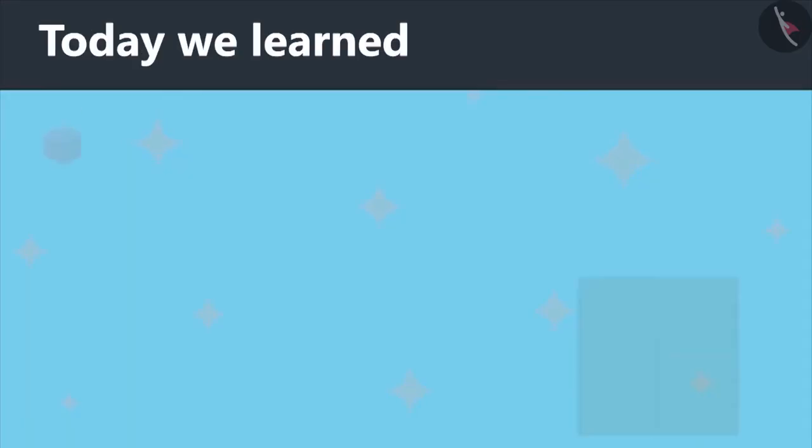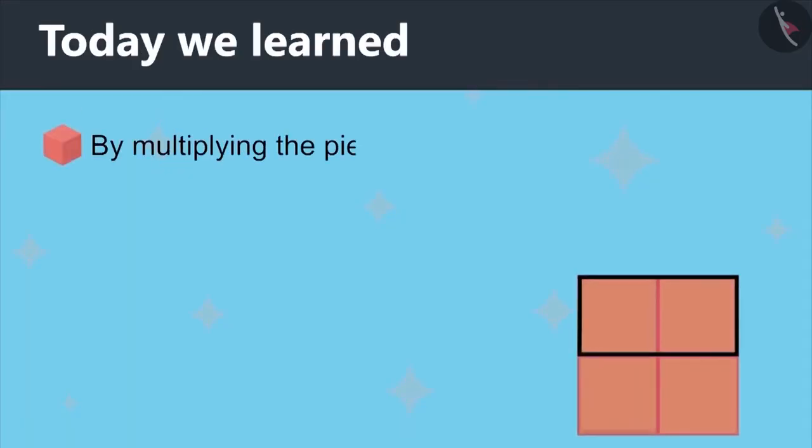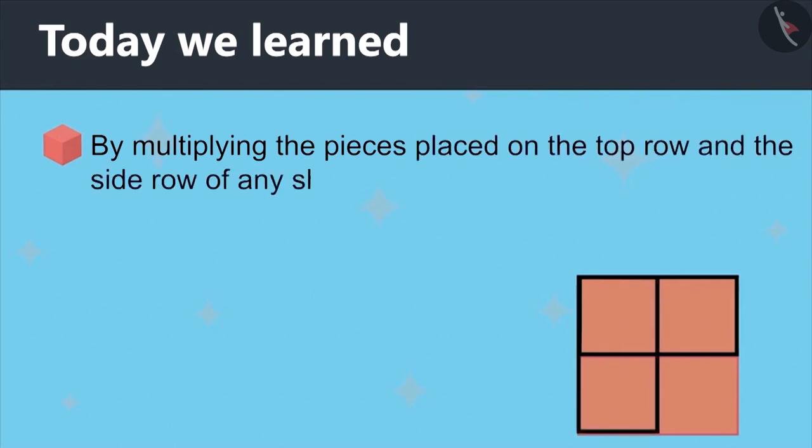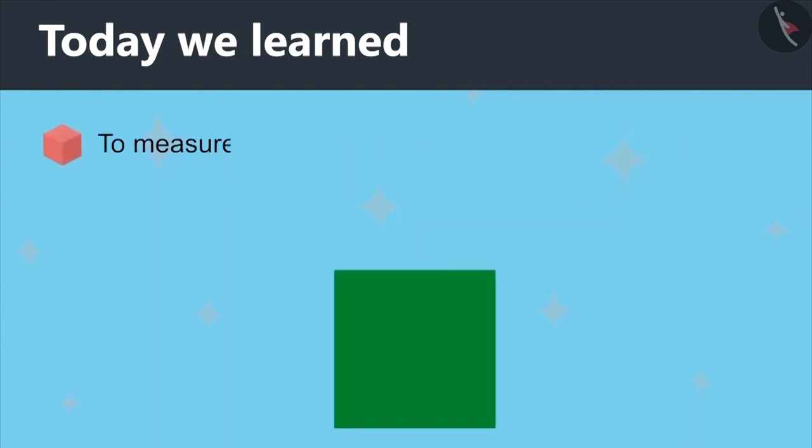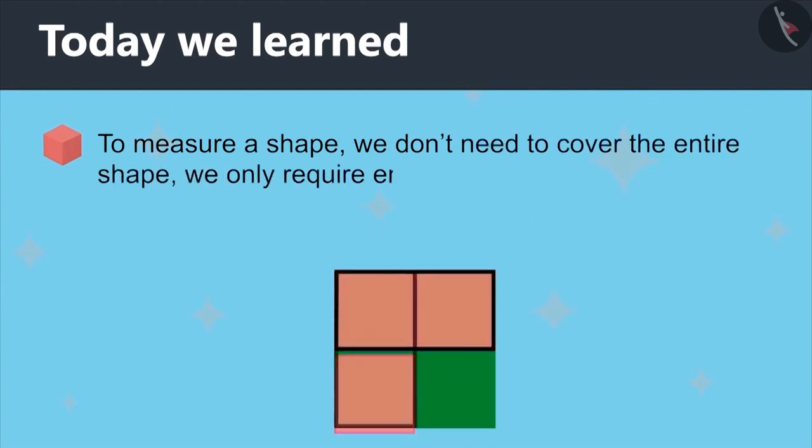Today, we learned, by multiplying the pieces placed on the top row and the side row of any shape, you can find out how many pieces will be required to cover the shape completely. That is, to measure a shape, we don't need to cover the entire shape. We only require enough pieces to cover the top and side edges.